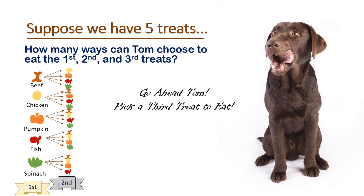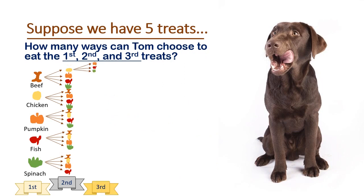Such a good boy, Tom. Go ahead and pick out a third treat. Let's draw another branch to our tree diagram. If Tom had the beef treat first, then the chicken treat, his only choices left would be the pumpkin, the fish, or the spinach.